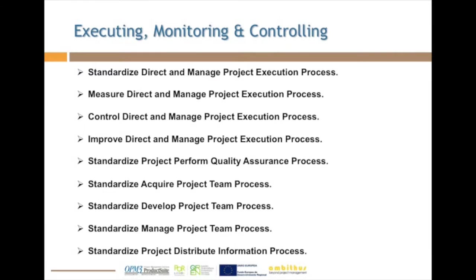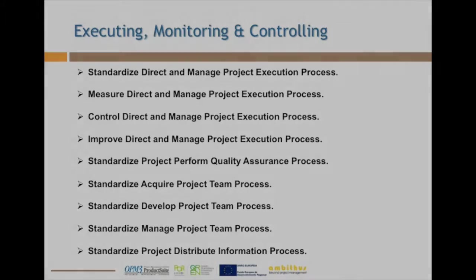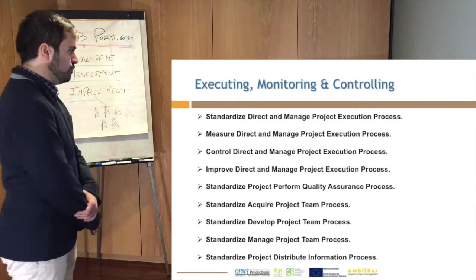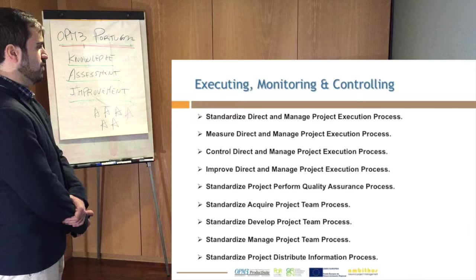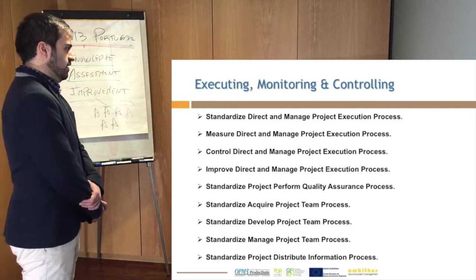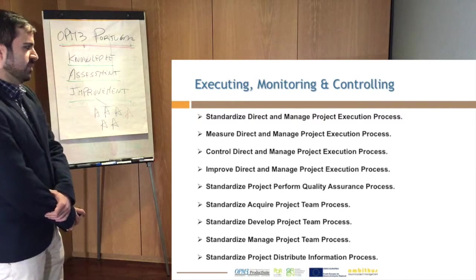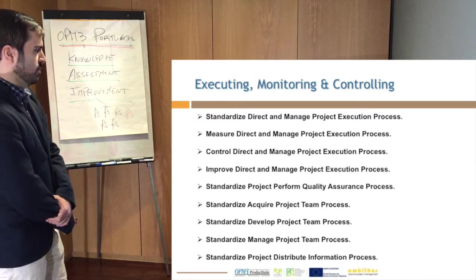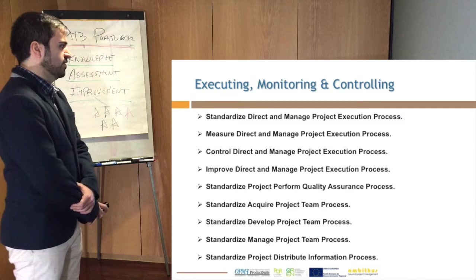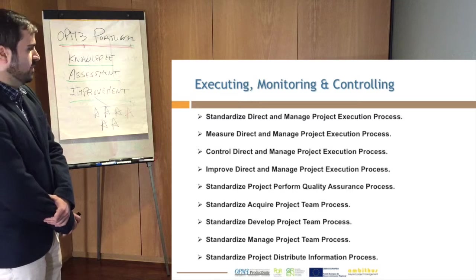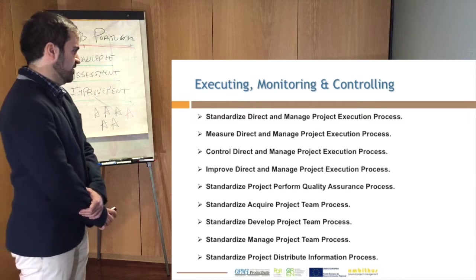Moving on to the next stage, we have the executing, monitoring, and control of the project. For the first process — the direct and manage project execution — we recommend the four stages to be implemented: standardization, measure, control, and improve. Following that, for quality assurance, we recommend to standardize. And for the processes related to the project team — meaning acquire, develop, and manage project team — these should be implemented at the stage of standardization.